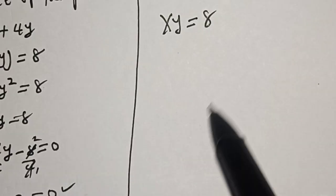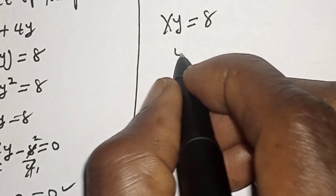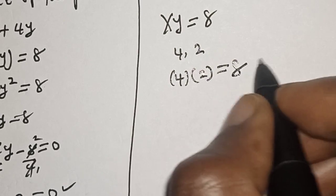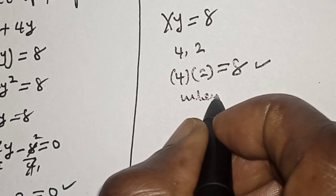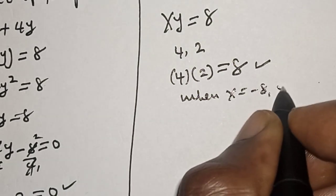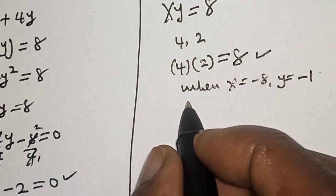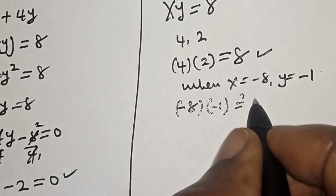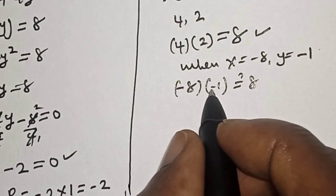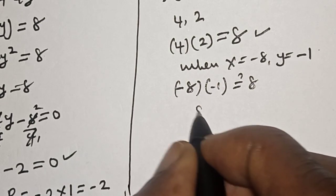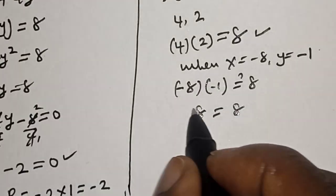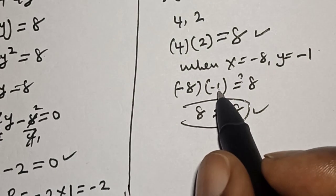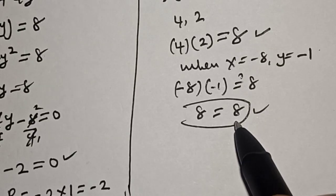Now checking equation 2: xy = 8. When x = 4 and y = 2: 4 multiplied by 2 = 8, which is true. When x = minus 8 and y = minus 1: minus 8 multiplied by minus 1 = 8, which also satisfies the given equation. If you enjoyed this, before you leave, like, share, comment and subscribe. Thank you, bye bye.